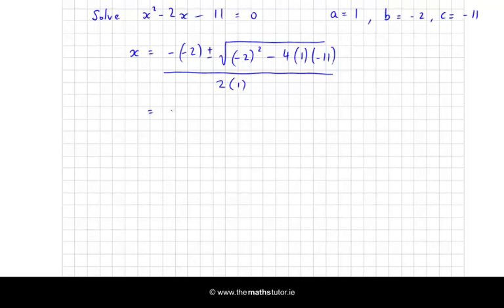So minus minus 2 gives me plus 2 plus or minus square root of minus 2 is 4 and then minus 4 by minus 11 is plus 44 all over 2. So that's 2 plus or minus root 48 over 2.